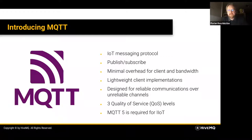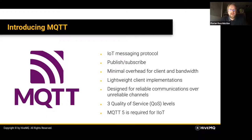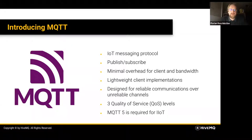MQTT is an IoT messaging protocol initially invented in 1999 by IBM for the purpose of monitoring oil pipelines. It was designed to be very lightweight in implementation, with reliable messaging even over unreliable channels and very small bandwidth overhead. In 2012, it was standardized by OASIS, introducing three quality of service levels that are crucial to MQTT in terms of message delivery guarantees.